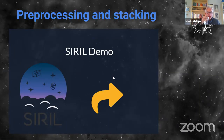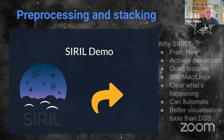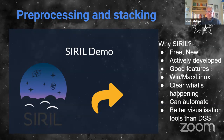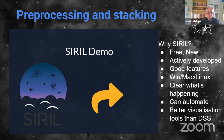Now for a demo of Siril. Why Siril? It's free, new, actively developed, cross-platform — so Mac and Linux users are happy too — and it's good for demoing because it's clear what's going on when you calibrate your data. You can automate it with scripts, but this time I'm going to demo it without scripting. It has better visualization tools than Deep Sky Stacker. The first step is to change the working directory to where our M27 data is — I've got data in three directories: lights, flats, and darks.